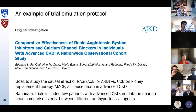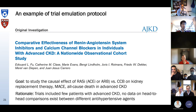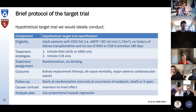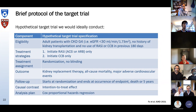To give you an example of a target trial emulation protocol: we published a study in AJKD where we wanted to study the causal effects of RAS inhibitors — ACE inhibitors or angiotensin receptor blockers versus calcium channel blockers — on kidney outcomes, cardiovascular outcomes, and mortality in advanced CKD patients. The rationale was that the seminal trials included very few patients with advanced CKD and there was basically no data on head-to-head comparisons between different antihypertensive agents.